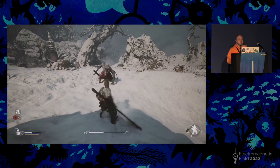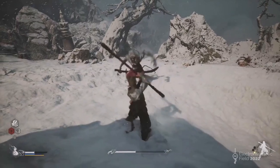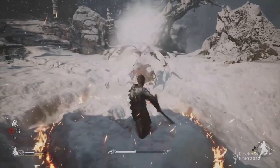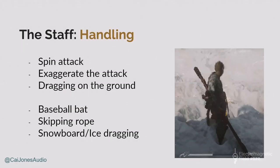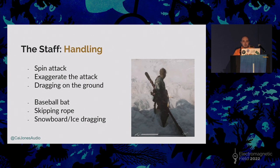Here is an example — a clip from Black Myth Wukong — I'm going to play it without sound so you can think about what we could use here. You might notice the character is carrying a staff, so the first thing we need is handling sounds. The character is moving it in the air and grabbing it. We need to show it's spinning, that there's a spin attack on the ground, and also the sounds of it dragging across the ground. For this, I used a baseball bat — basically slapping it in my hand — a skipping rope spinning really fast in front of my microphone, and then grabbed a snowboard and dragged it across ice to kind of make this sound.